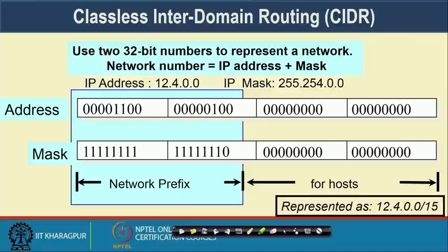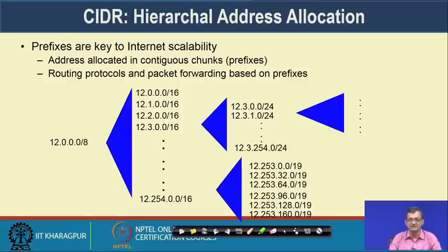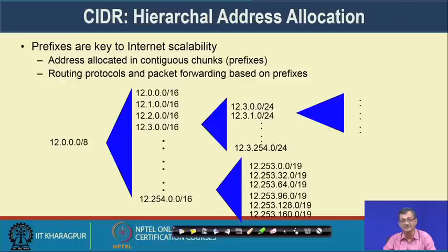You choose the addressing class based on your organization's requirement. We also have Classless Inter-Domain Routing (CIDR), where instead of classful boundaries, we represent addresses with a variable-length IP mask of any length — again followed by 1s then 0s. For example, 112.4.0.0/15 means the first 15 bits represent the network and the rest represents the host, allowing subnetting into different sub-networks.